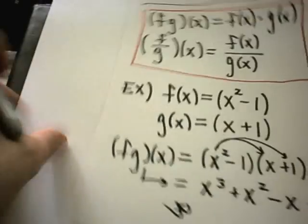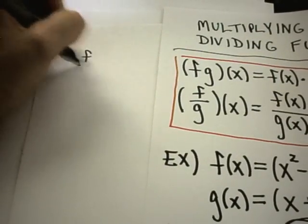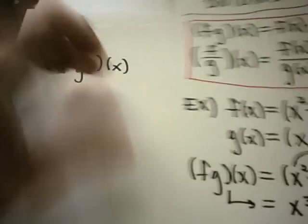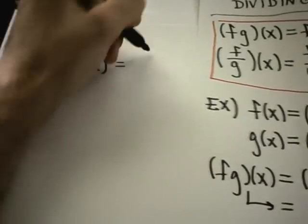Likewise, if they wanted me to find f divided by g of x, same thing. So suppose I'm going to find f over g of x. Well again, f of x is x squared minus 1, so that's the one that's going to go on top.